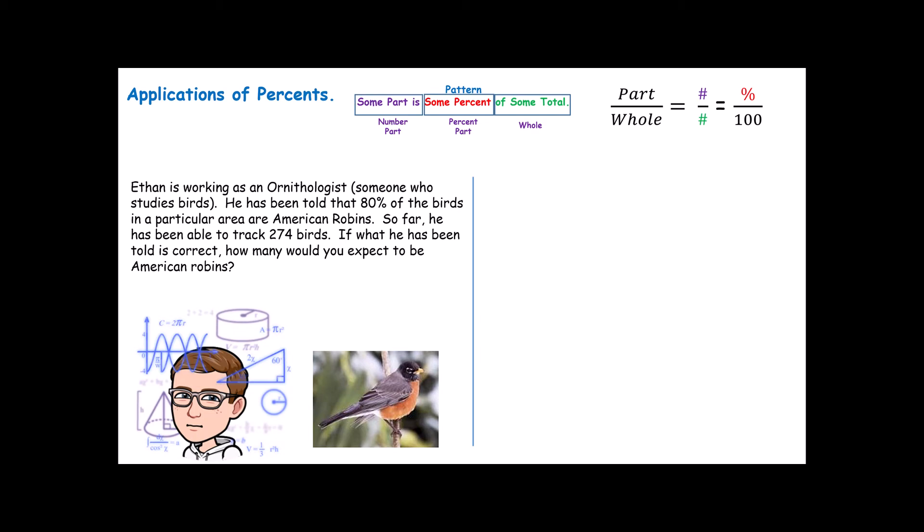And so in this video series, what we're going to do is we're going to look at a couple examples that we would consider to be percent problems that might apply more directly to the real world. Rather than just somebody giving you a question about percents, instead we're going to give you some situations where percents might be helpful. So here's the problem we have first. Ethan is working as an ornithologist. That's someone who studies birds. And he has been told that 80% of the birds in a particular area are robins. So far, American robins. So far, he's been able to track 274 birds. If what he has been told is correct, how many would we expect to be American robins?